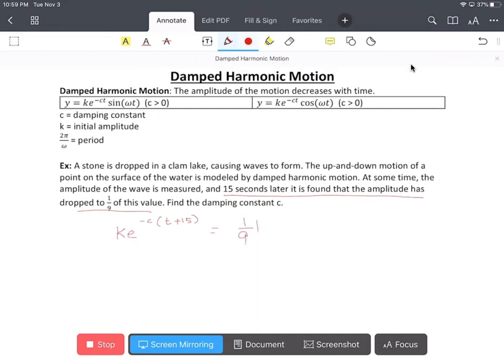So I'm going to distribute my negative t, then we will get ke negative ct minus 15c. And we can rewrite it as ke negative ct times e raised to 15c, which is equivalent to the right hand side, one-ninth k e negative ct.